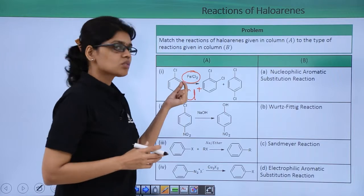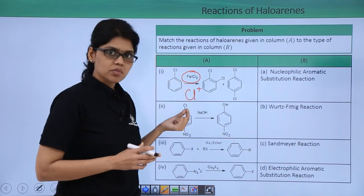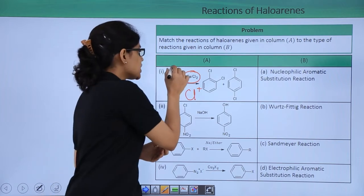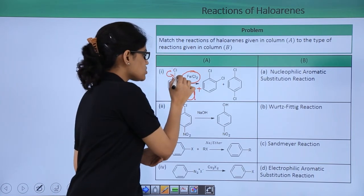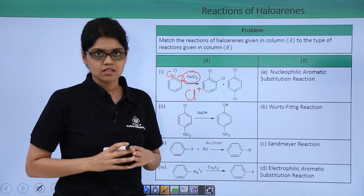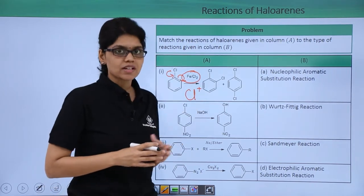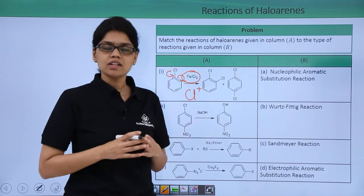This electrophile can attack the electron rich centers at ortho and para position where the electron density is concentrated due to delocalization of lone pair of electrons of chlorine with the pi electrons of the benzene ring. So this is essentially how electrophilic aromatic substitution has taken place in this particular reaction.